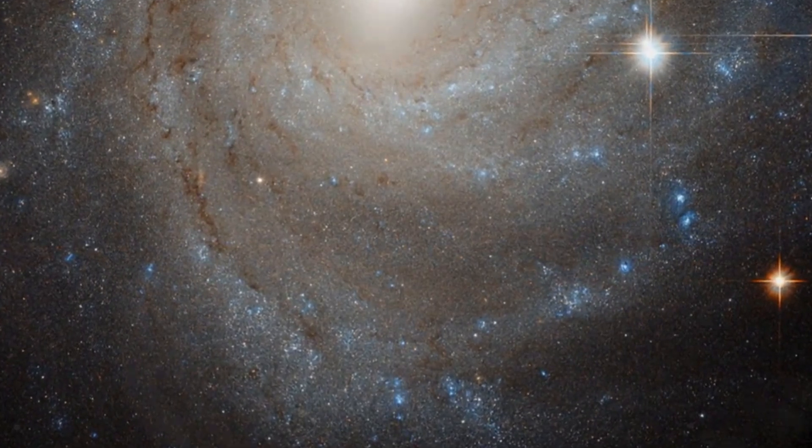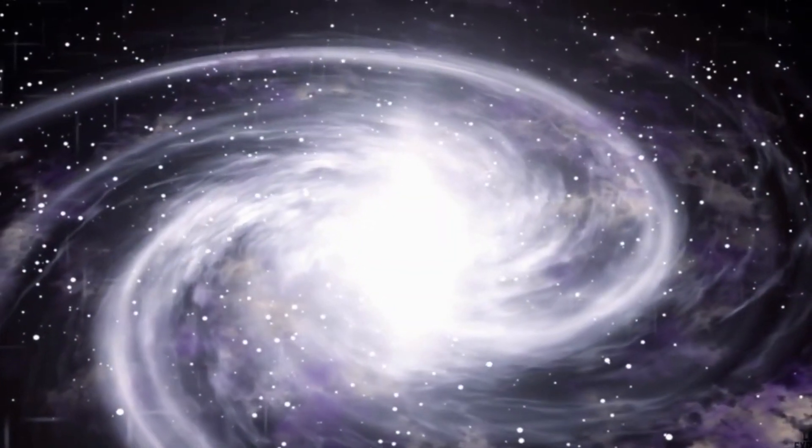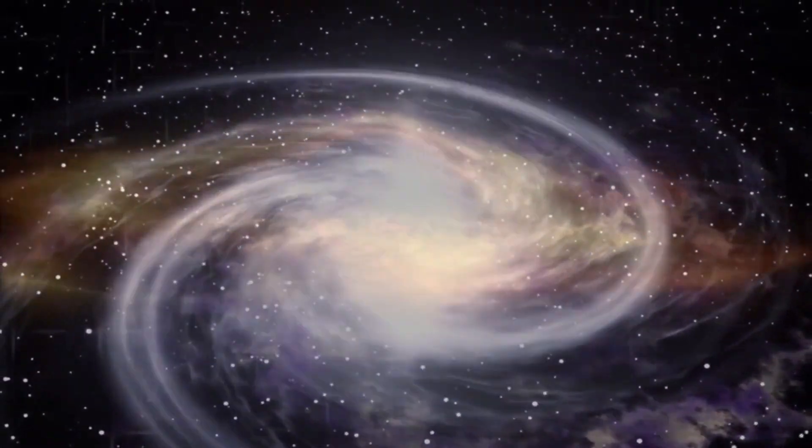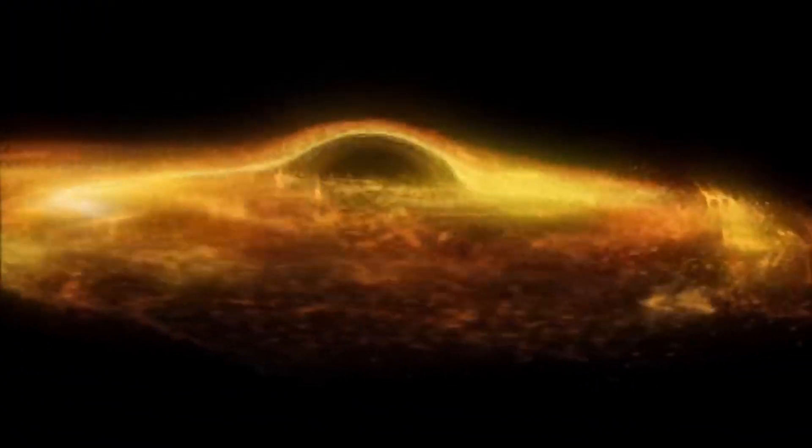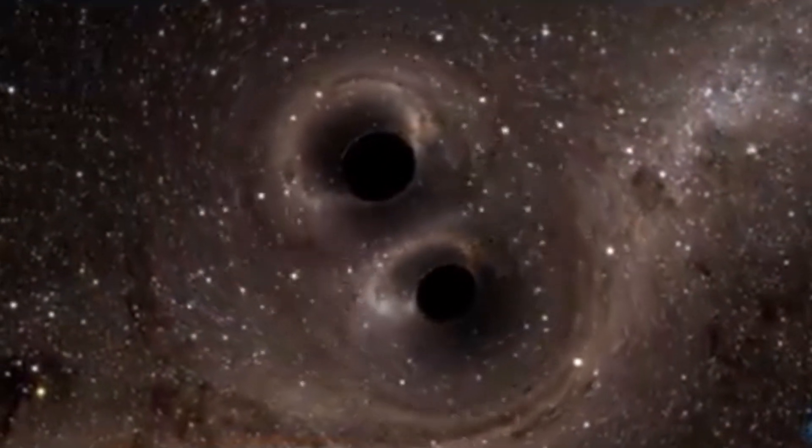Over hundreds of millions of years, the galaxy's outer arms will first be stretched and distorted by gravity. Tidal forces will begin shredding the fragile spiral structure. Eventually, the central supermassive black holes will collide and coalesce into one enormous black hole. This will fuel blazes of new star formation.